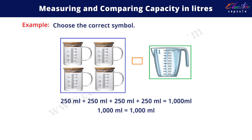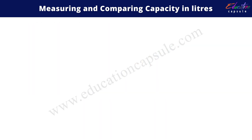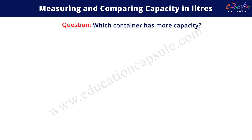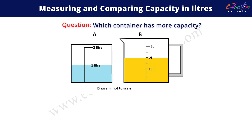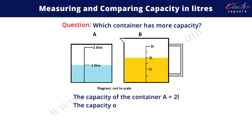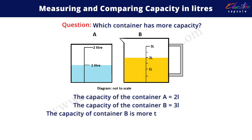Let's try a question. Which container has more capacity? The capacity of container A is two liters, whereas the capacity of container B is three liters. So the capacity of container B is more than the capacity of container A.